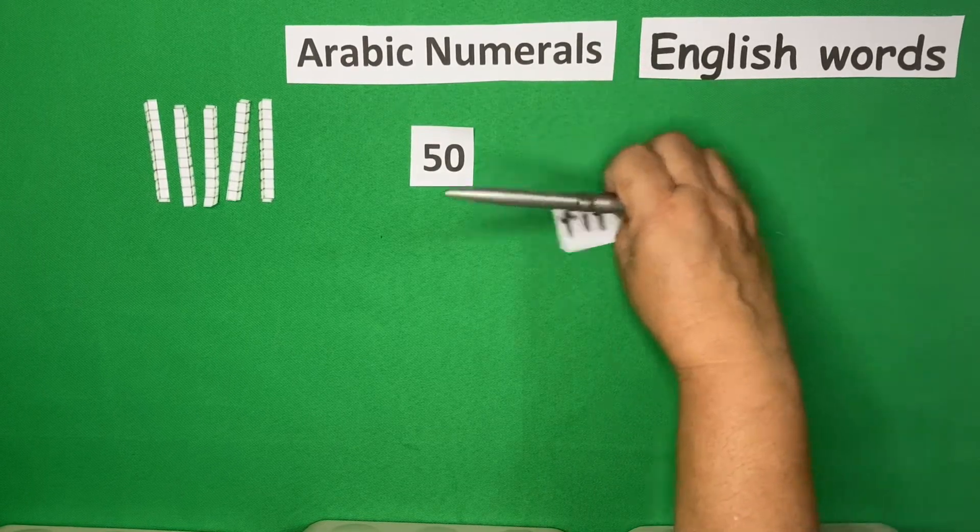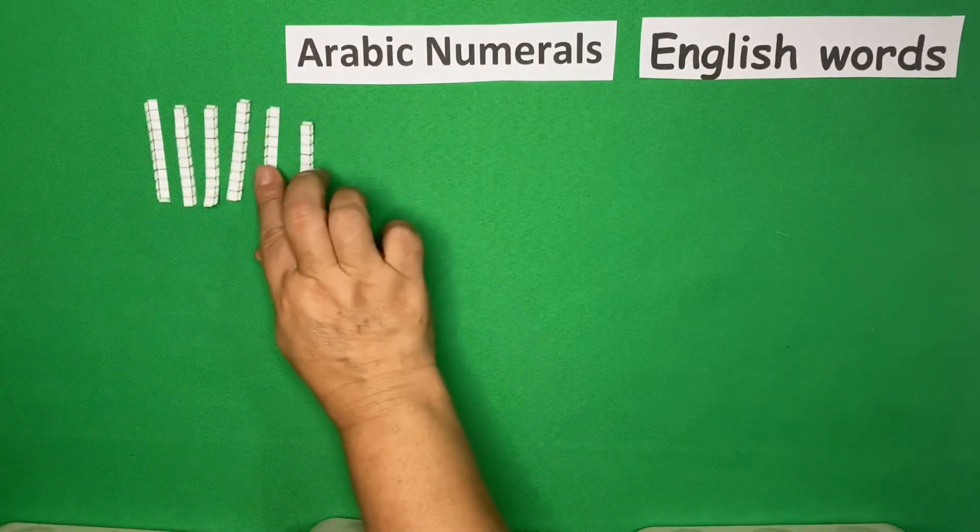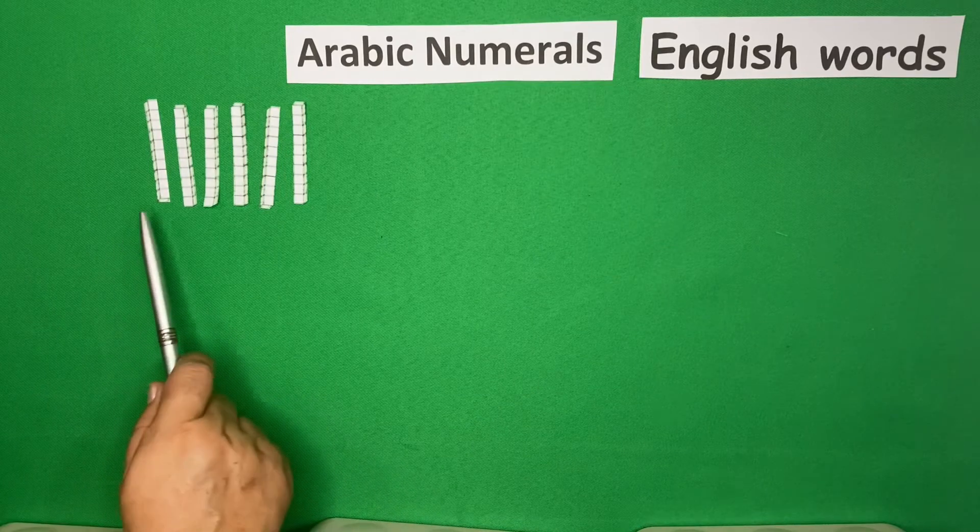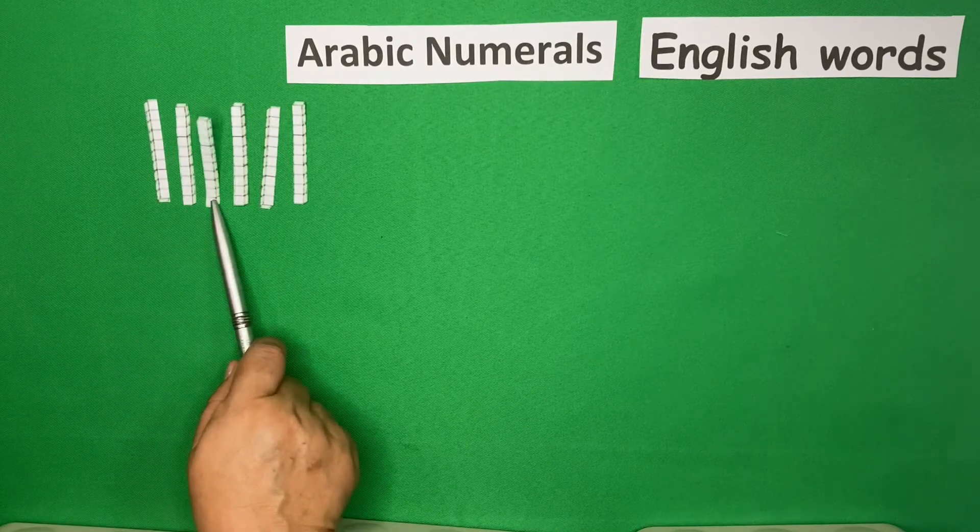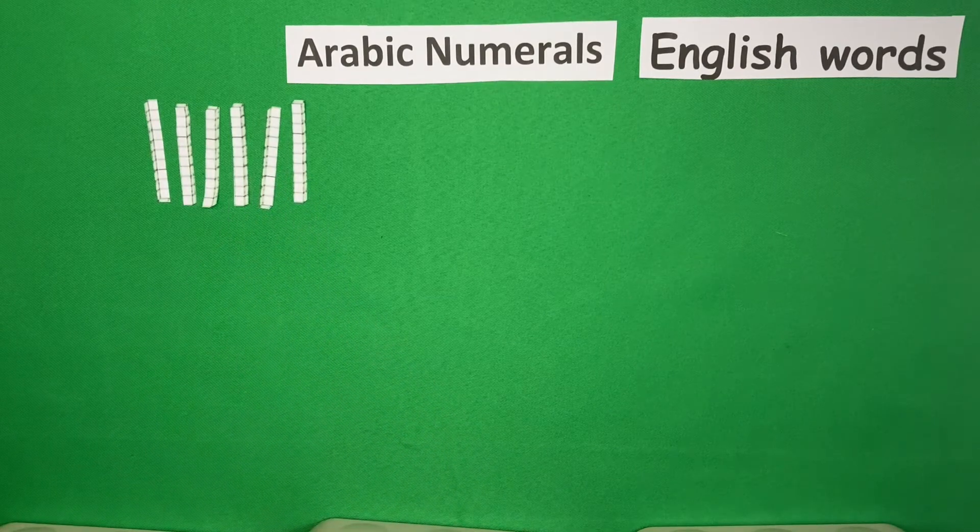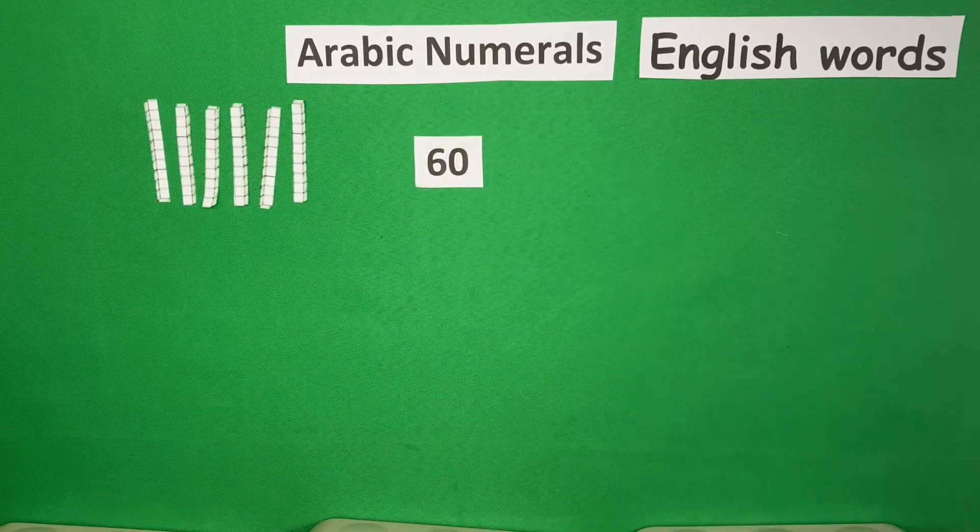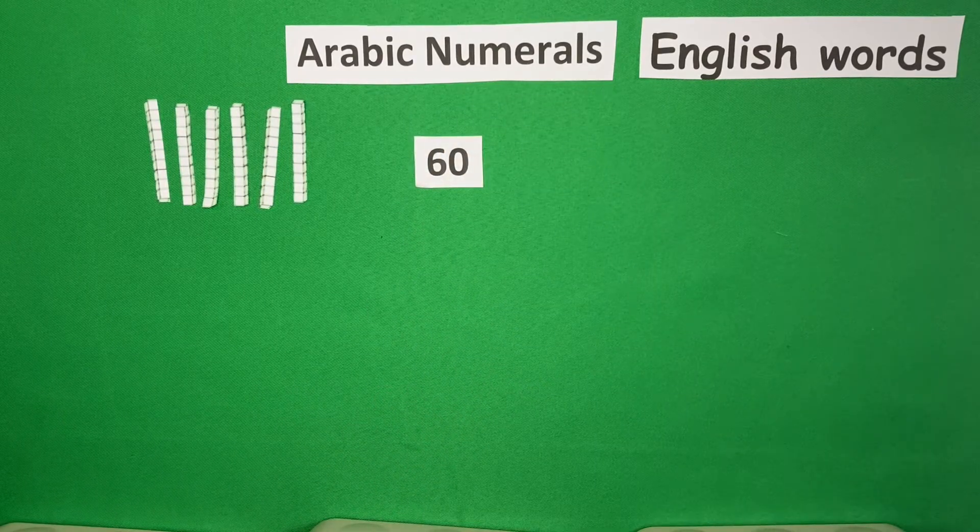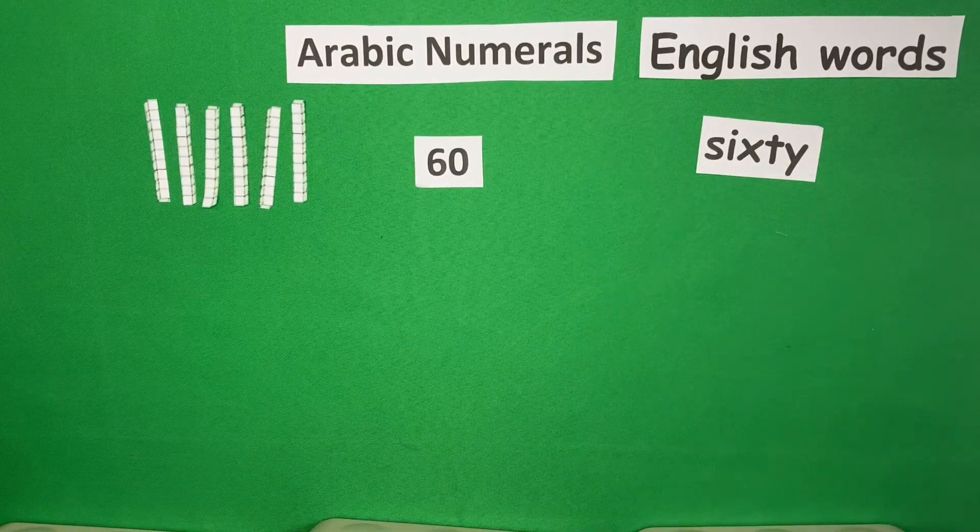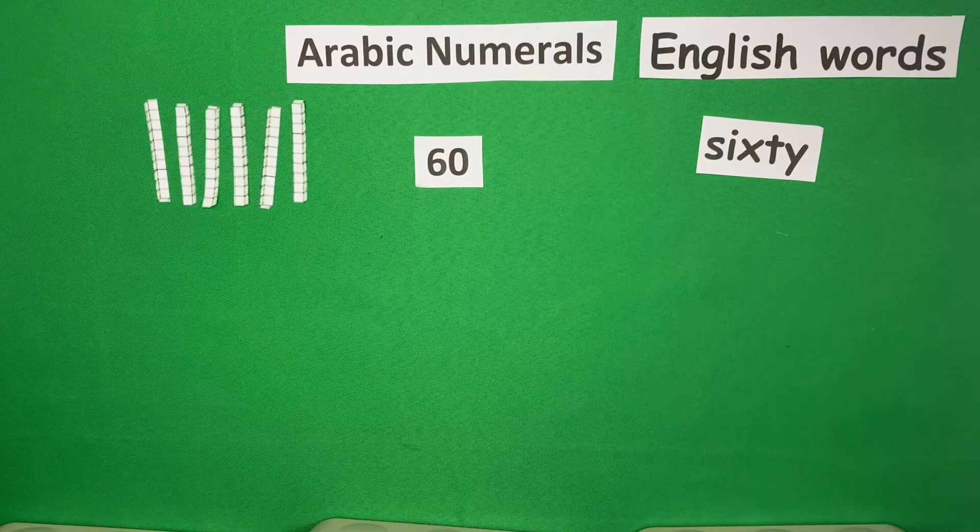Then, we will add 1 more. Here, we now have 6 tens. So, 10, 20, 30, 40, 50, 60. In Arabic, 60 is this, 6, 0, 60. And to write this in English, it's S-I-X-T-Y, 60.